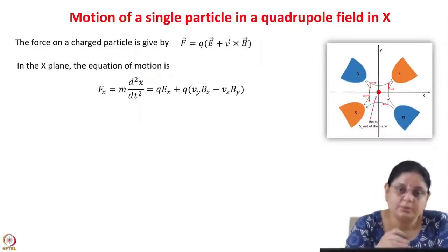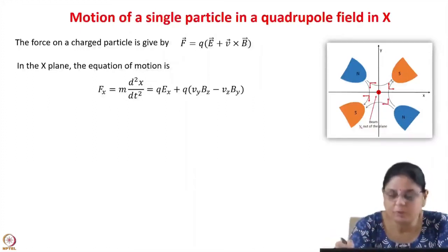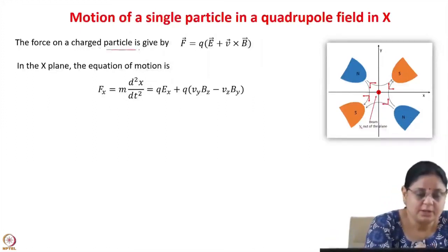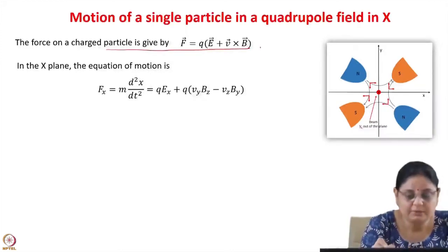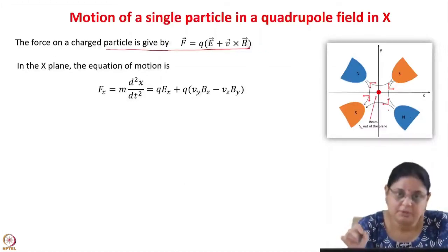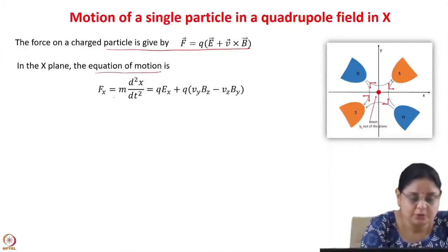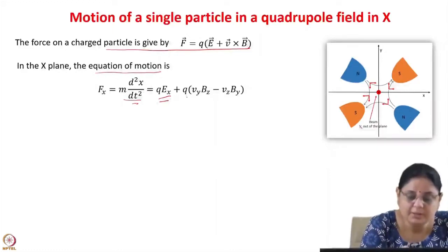Let us analyze the behavior by solving the equation of motion for a charged particle in a quadrupole field in the x direction, and then calculate the transfer matrix for a quadrupole. The force on a charged particle is given by QE plus v cross B. In the x motion, for this focusing quadrupole in the x direction, the equation of motion is Fx = m(d²x/dt²) = QEx plus Q(vyBz minus vzBy).